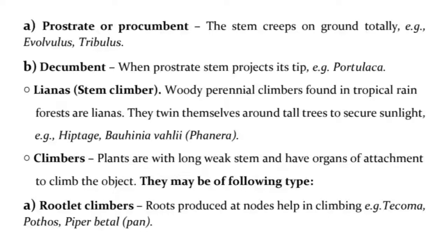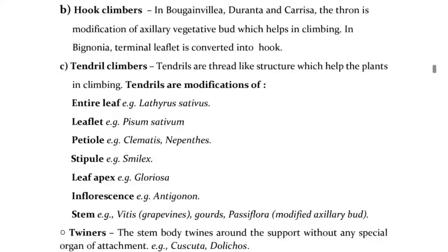A. Rootlet climbers — roots produced at nodes help in climbing, e.g., Tecoma, Pothos, Piper betle (Pan). B. Hook climbers — in Bougainvillea, Duranta and Carissa, the thorn is a modification of axillary vegetative bud which helps in climbing. In Bignonia, the terminal leaflet is converted into a hook.